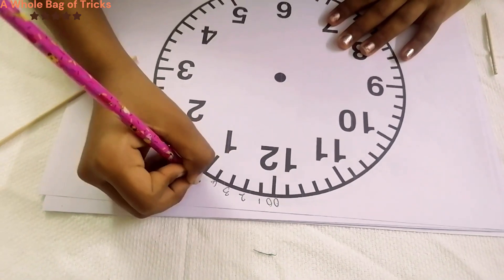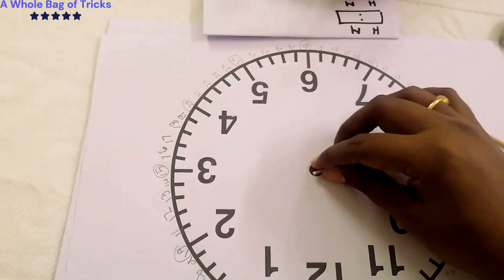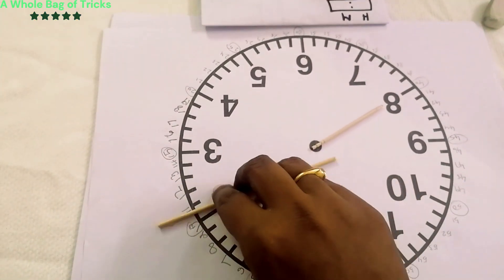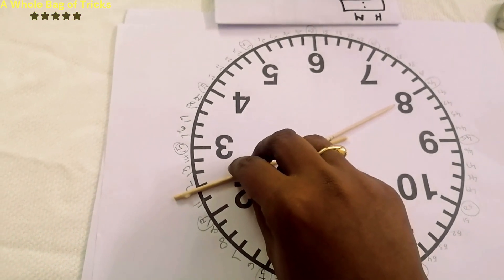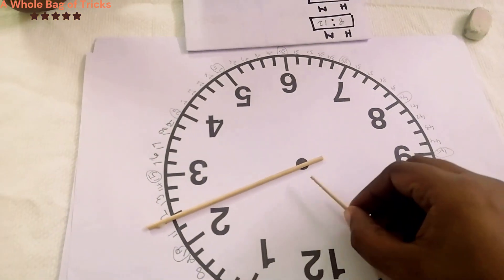Now make the kid write down each minute value from 00 to 59 outside the circle, outside the clock face. This will help them visually understand what 23 means. It means from the 20 minutes, that is from the 4, he has to add 3 more minutes.